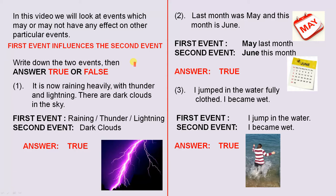Write down the two events, then answer true or false. Let's look at statement 1: it is now raining heavily with thunder and lightning. There are dark clouds in the sky. The first event: it's raining, there's thunder, there's lightning. The second event: there are dark clouds. The answer is true, because the fact that it's raining, there is thunder and there is lightning, has an influence on the second event — there will be dark clouds. In other words, it can't be a sunny day.